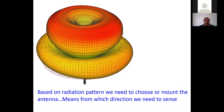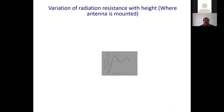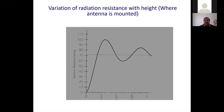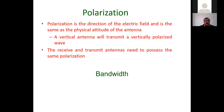When mounting the antenna for sensing, you must mount it at a proper height. If the antenna is very close to the ground, the radiation resistance oscillates between 100 and 60 ohms. Generally, the antenna is kept at around one wavelength above the ground.